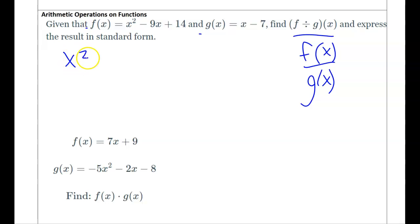Well, that would be x² - 9x + 14 over x - 7. Okay.